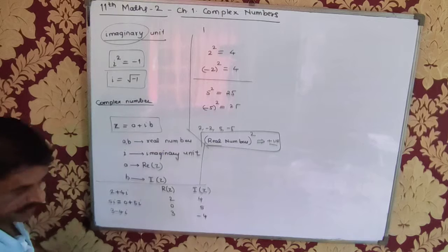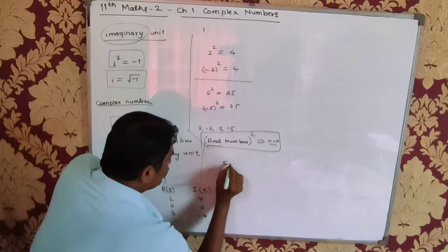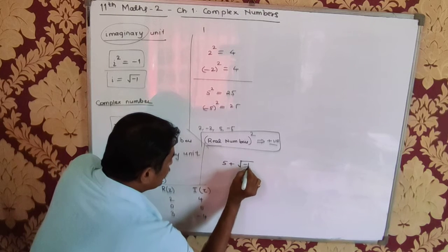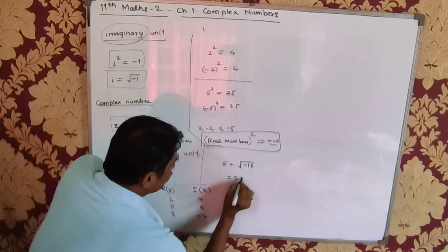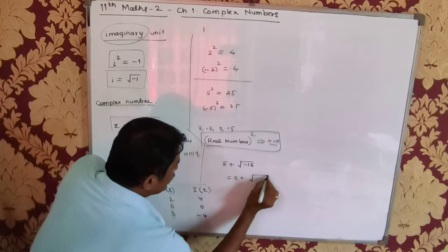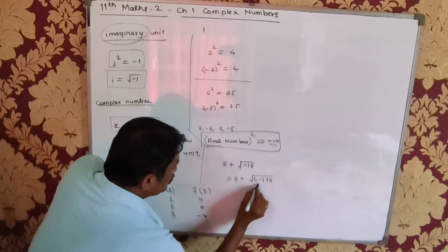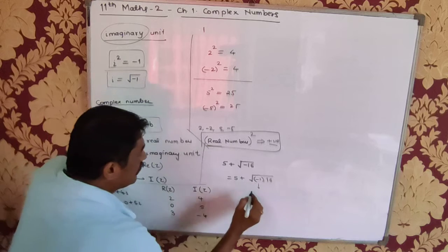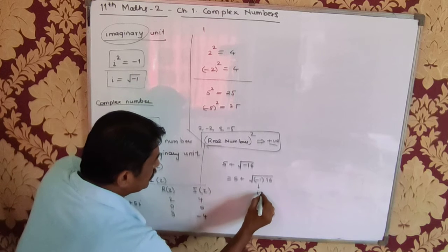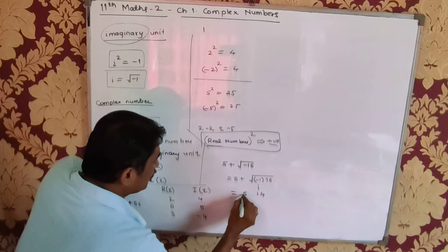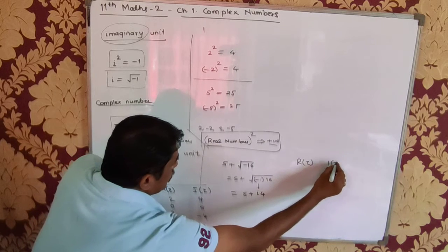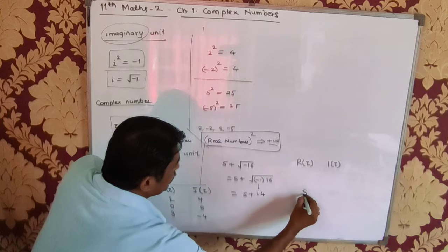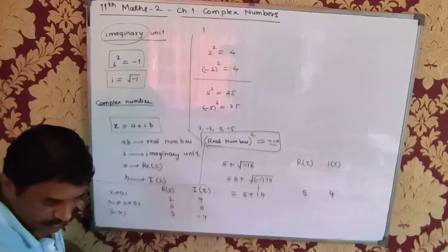Now if I consider the next number: 5 + √(−16). Now √(−16) = √(−1) × √16 = i × 4 = 4i. So this is actually 5 + 4i. Therefore the real part of this number is 5 and the imaginary part is 4.